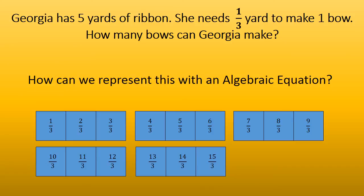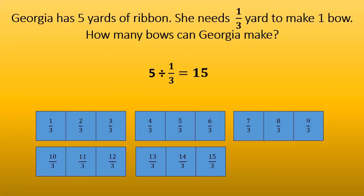Now how can we represent this in an algebraic equation? We took five yards and divided it by one third, which equals fifteen. So that shows that Georgia can make fifteen bows.